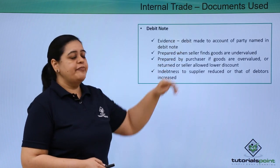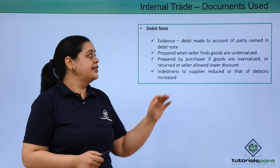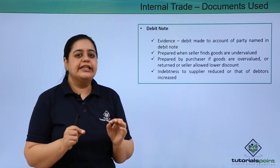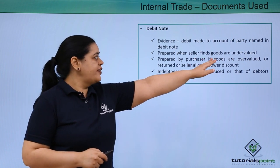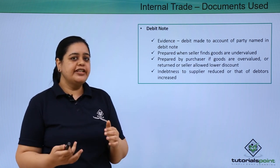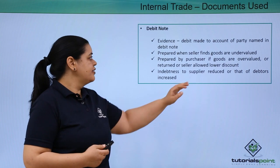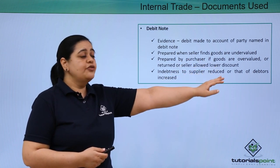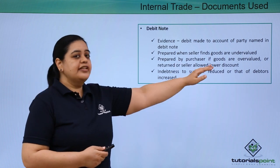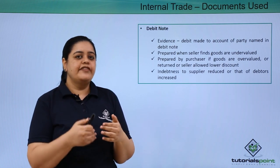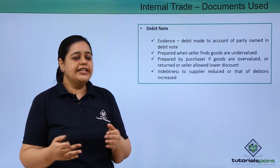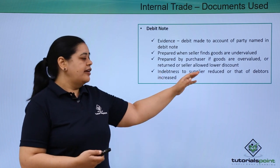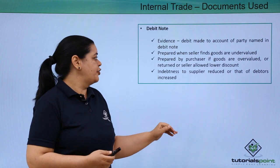The next document is the debit note. This is evidence that a debit has been made to the account of a particular party, who would be named in the debit note. It is prepared when the seller finds the goods are undervalued. Sometimes it is the purchaser who prepares it — when he thinks the goods are overvalued, if he has returned some goods, or if the seller has allowed a lower discount.